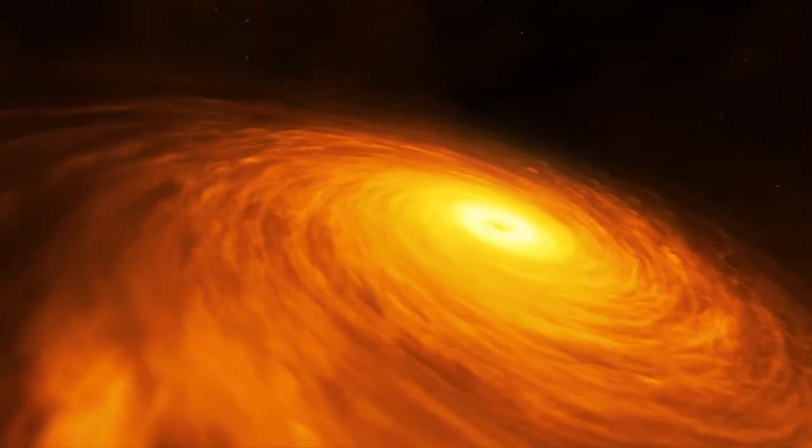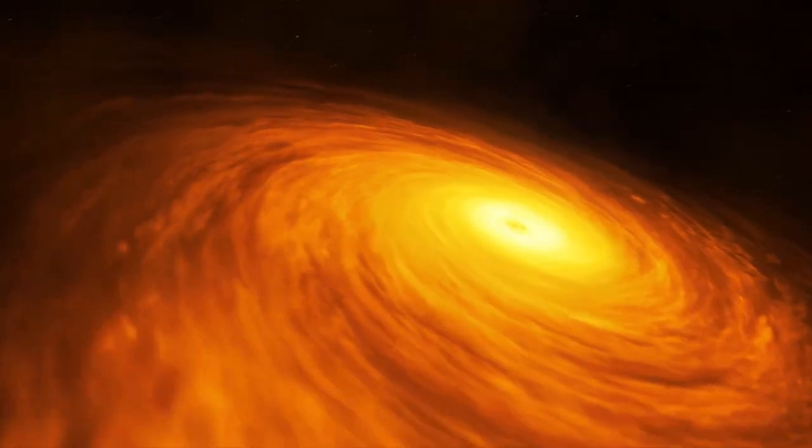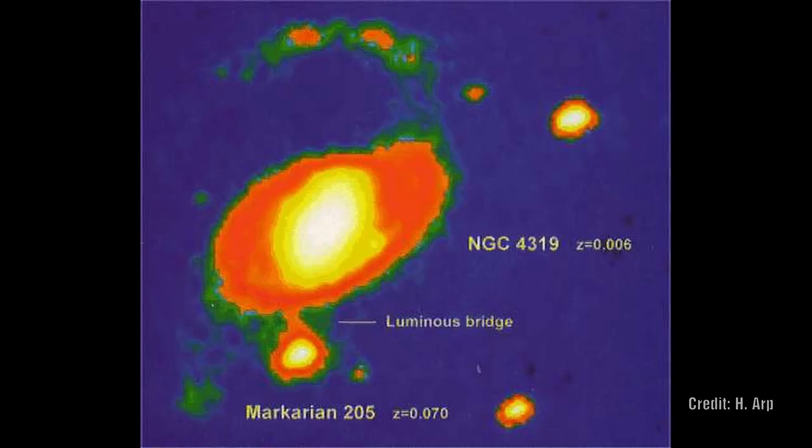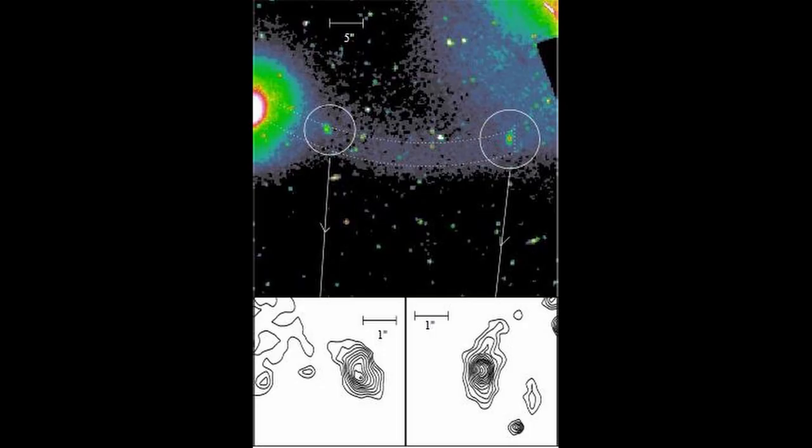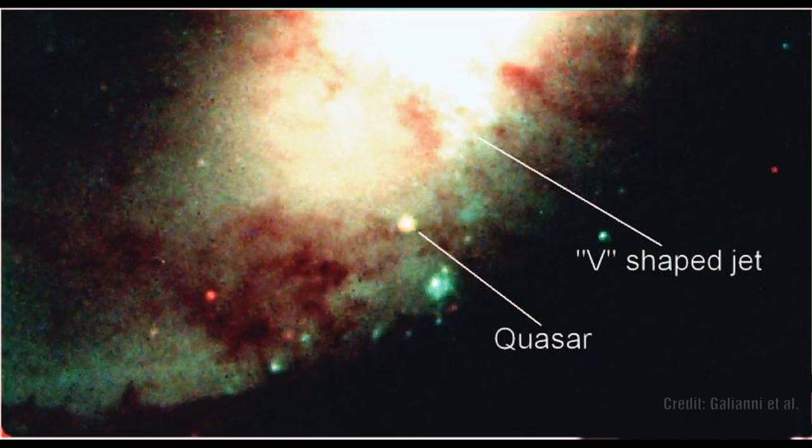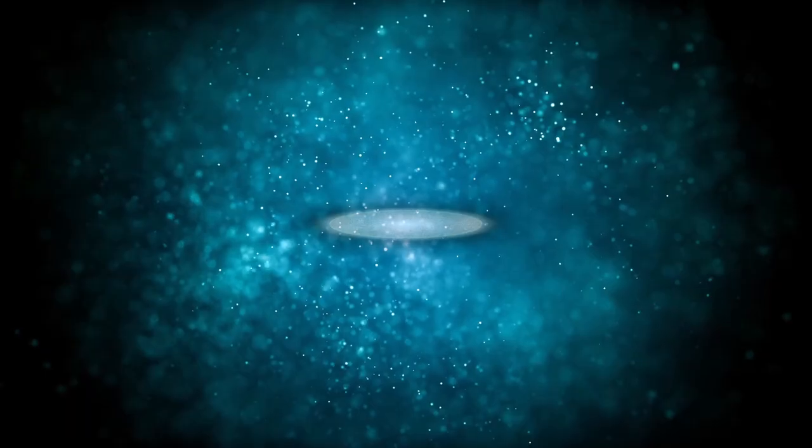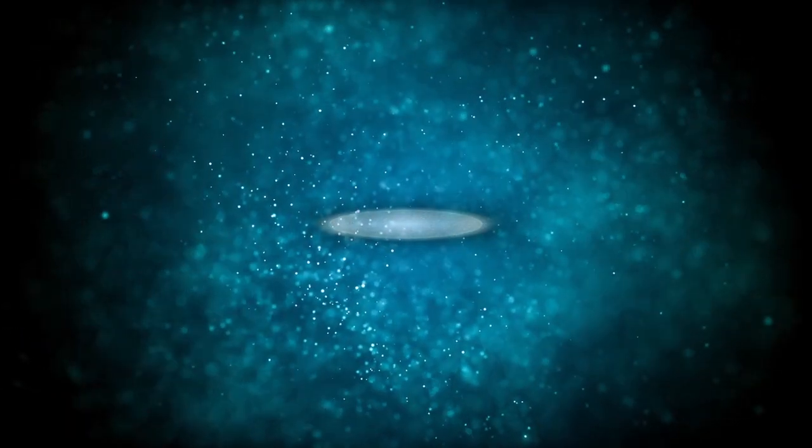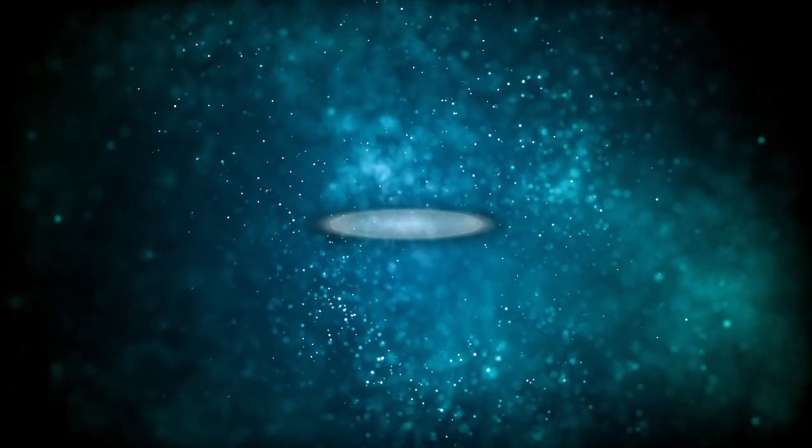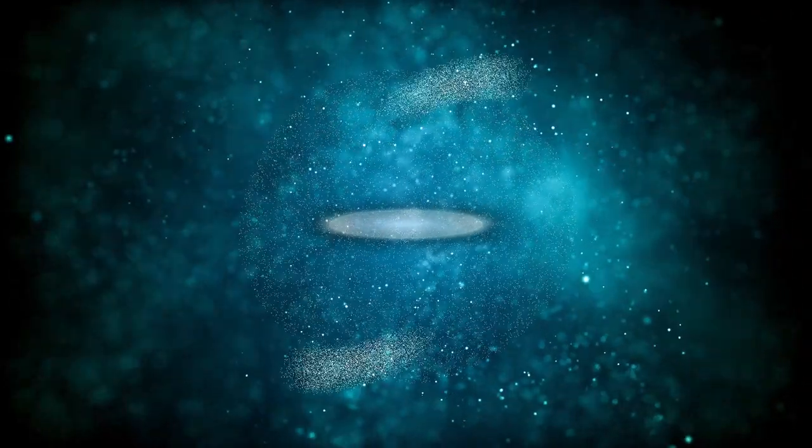Now we do know from Halton Arp's photography that there are images where there seems to be a connection between the host galaxy and the quasar. Now the question is whether that can feed in extra material after the quasar forms, after the plasmoid has formed. And again, we don't know really what happens. What happens if you add extra material into an already formed plasmoid?